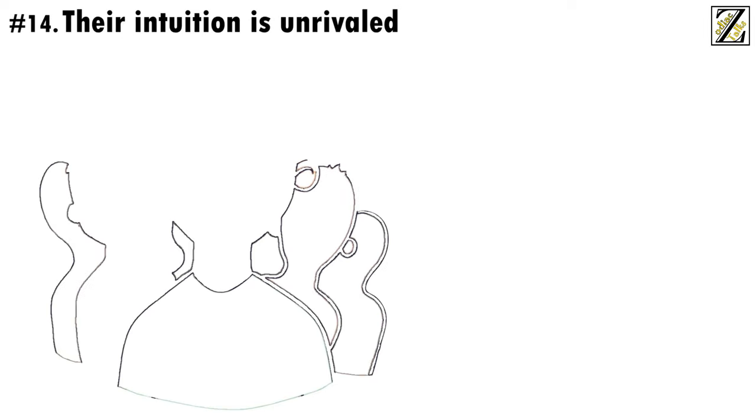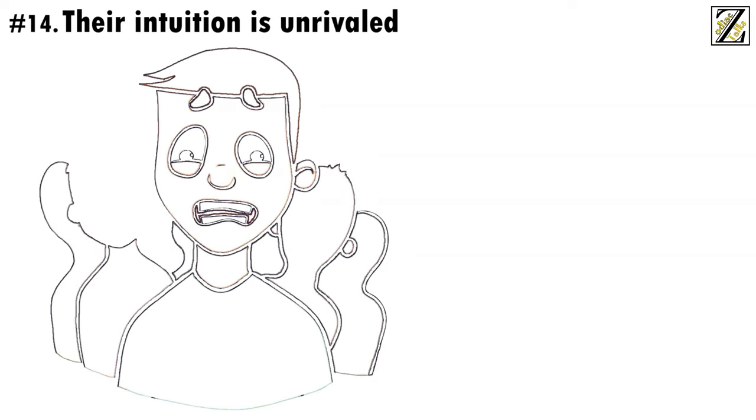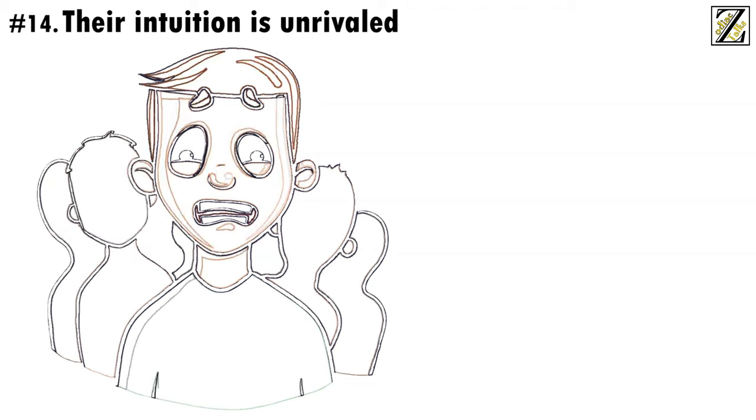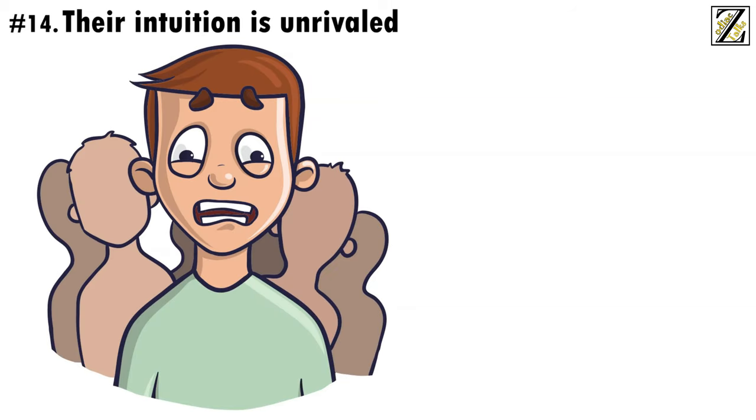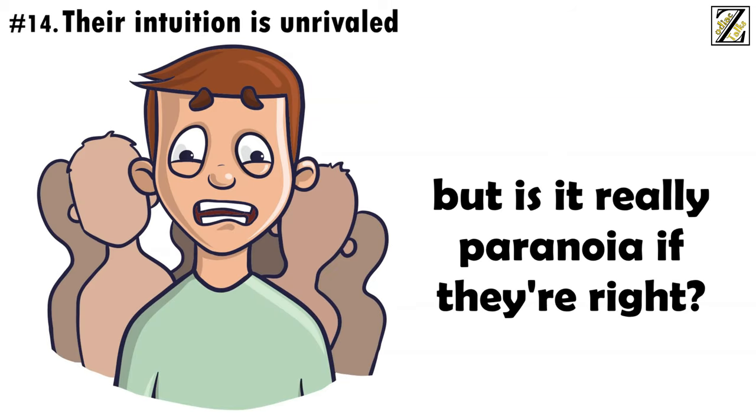Number 14. Their intuition is unrivaled. Cancers have a very developed intuition and can usually read people in situations much better than other signs. This has earned Cancerians a reputation as paranoid individuals. But is it really paranoia if they're right?